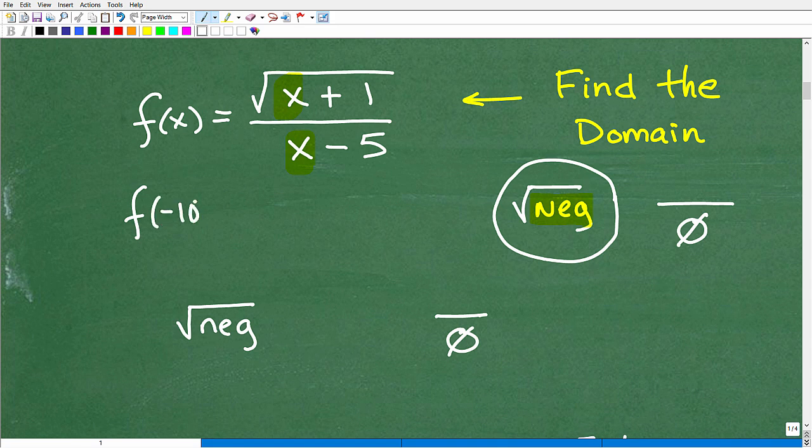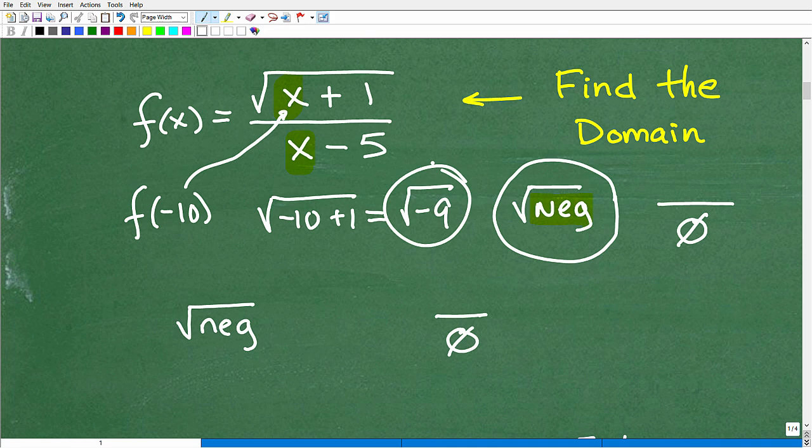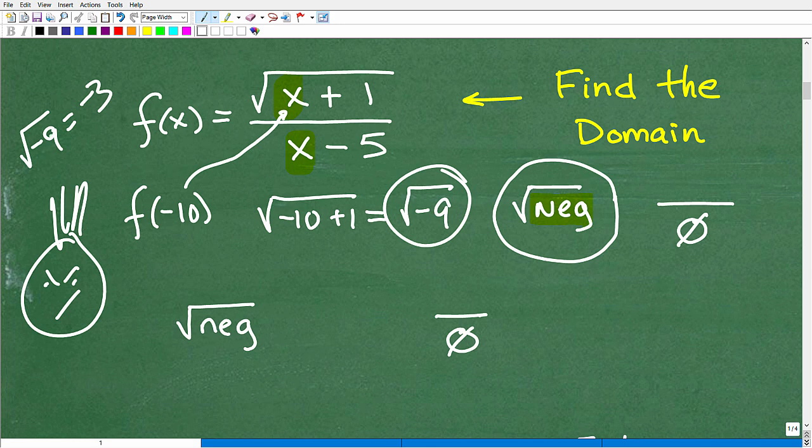Any value that would cause this to be a negative number would not be allowed. If I try to find f of negative 10, if I plug in negative 10, I'm going to get negative 10 plus 1, that's the square root of negative 9. That's a no-no. The square root of negative 9, it's not just negative 3. Wrong. Take the square root of negative 9 - your calculator might start smoking or vibrating violently. If you have an advanced graphing calculator, maybe you can come up with an imaginary number, 3i. But in terms of the set of real numbers, the square root of negative 9 is not negative 3, because negative 3 times negative 3 is positive 9.